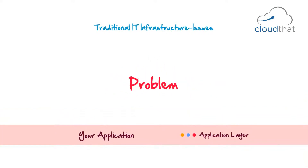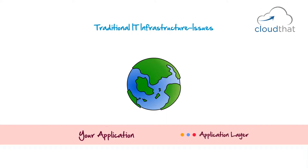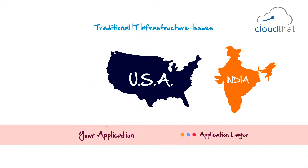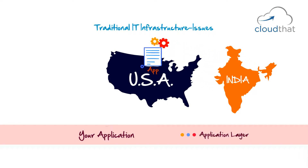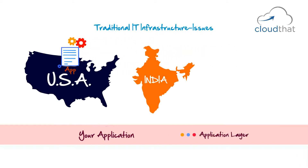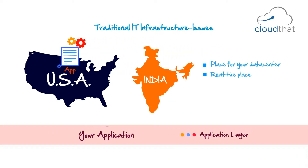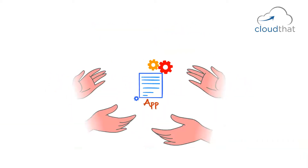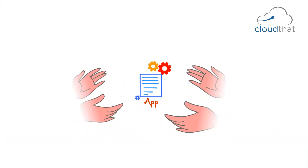At the application layer, the problem is that you are tightly coupled to your geographic location. Let's say you release your application in India, but it becomes really popular in the USA — US users might not get the best performance because of latency from India, giving them a subpar experience. If you plan to move your application to the US, you will have to start from scratch: finding a suitable place for your data center, renting it, buying servers, deploying them, and so on. The entire process you did in India has to be replicated again in the US, and you never know where your application will become popular.